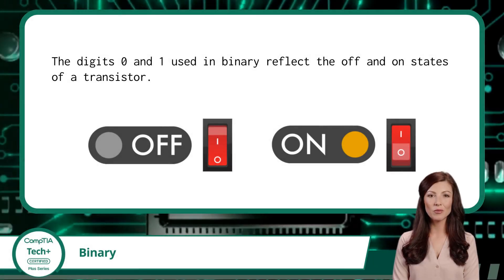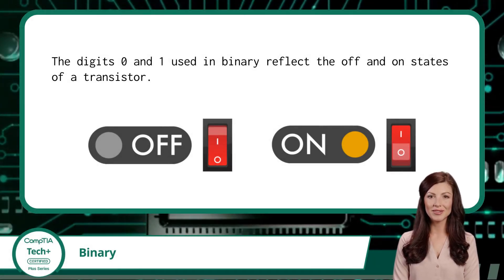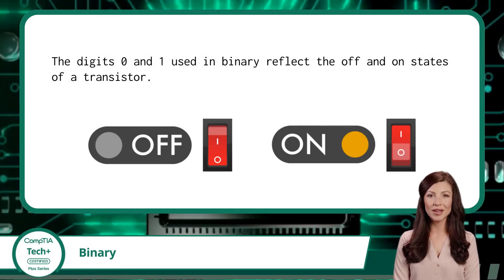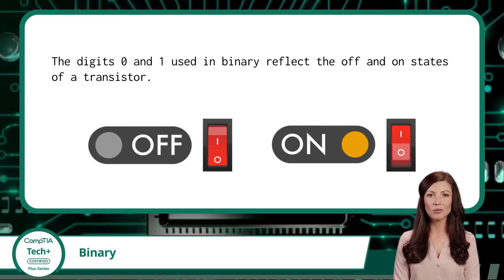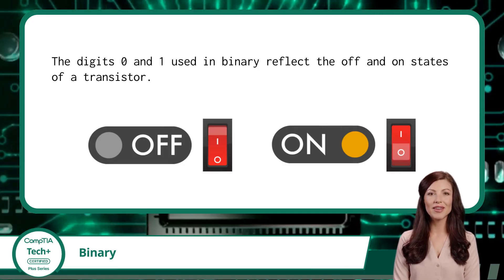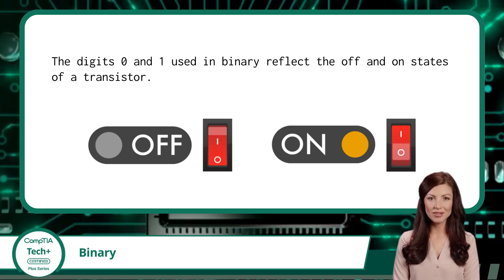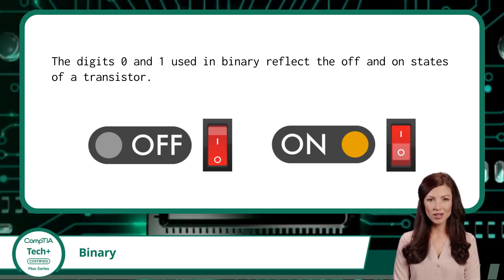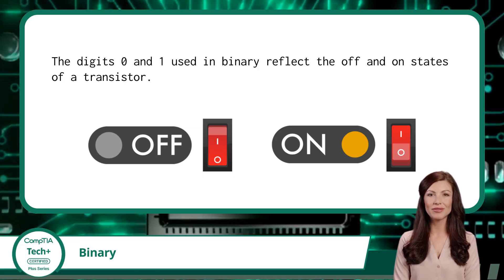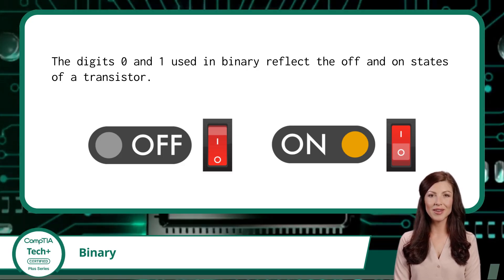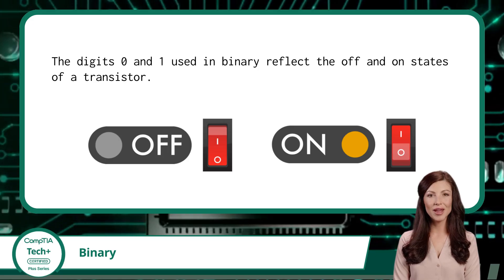So why would a computer use a number system with only two digits? Well, it comes down to how computers are built. At the hardware level, computers are made up of billions of tiny electronic switches called transistors. These switches have just two states: off or on. And binary maps perfectly to this.